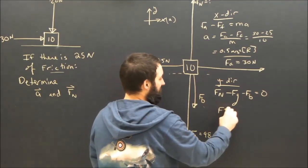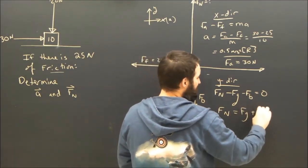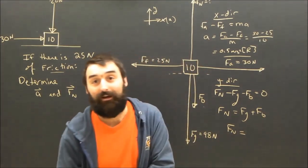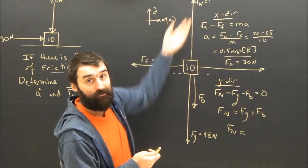And the normal force here, let's rearrange this for Fn, is going to be equal to Fg plus Fb. Yet another example where the normal force is not equal to gravity. And that's a common mistake people make on the test. They'll just say, oh, Fn is 98. Fg is 98.